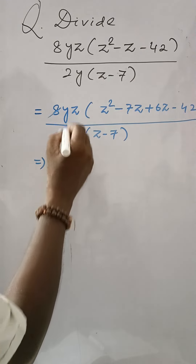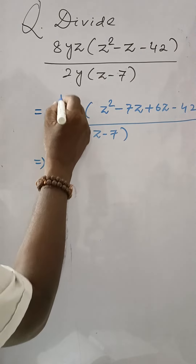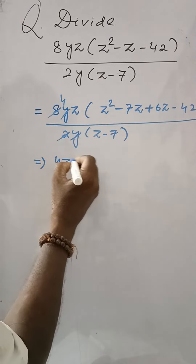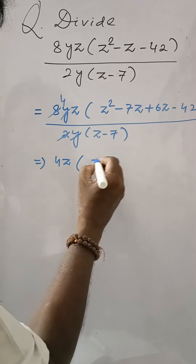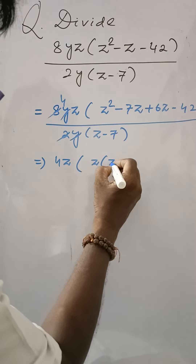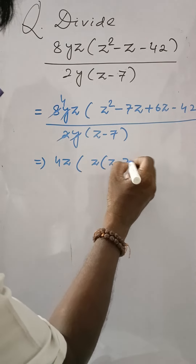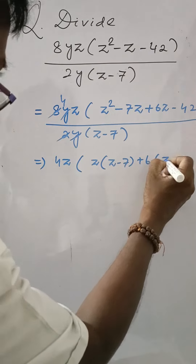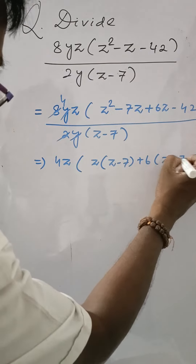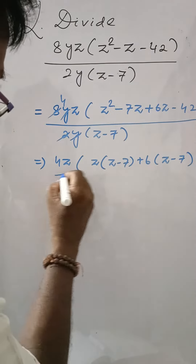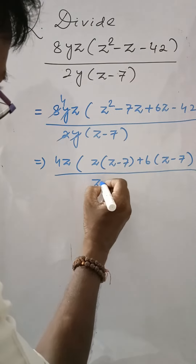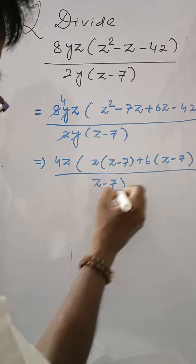8 cancelled, Y and Y cancelled, this is 4. So we have 4Z into — taking Z common gives (Z - 7), plus 6 common gives (Z - 7) — whole divided by (Z - 7).